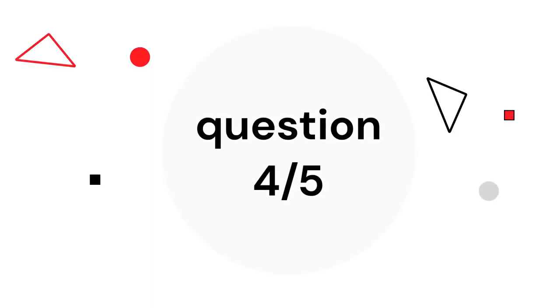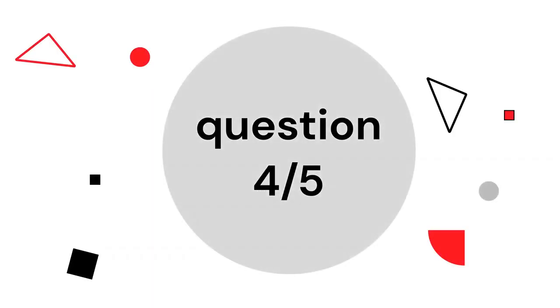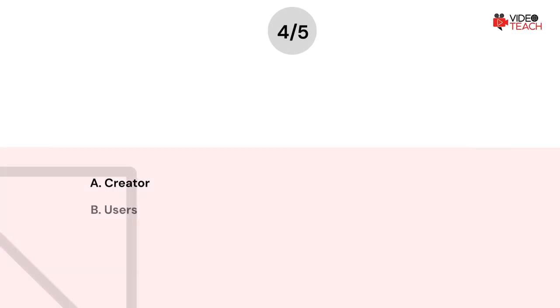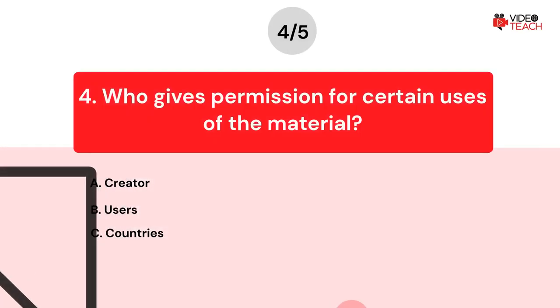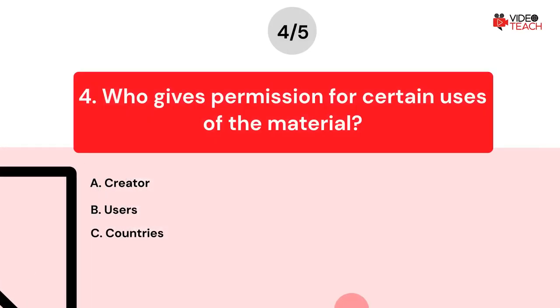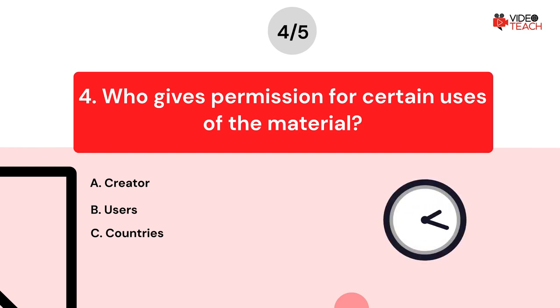Question number four. Who gives permission for certain uses of the material? Option A: Creator. Option B: Users. Option C: Countries. Now you have about 15 seconds to think about your answer.